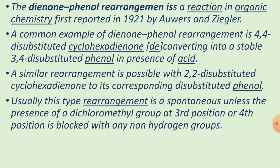A common example of the diynone-phenol rearrangement is 4,4-disubstituted cyclohexadienone converting into the stable 3,4-disubstituted phenol in the presence of acid. A similar rearrangement is also possible with the 2,2-disubstituted cyclohexadienone converting to its corresponding disubstituted phenol.